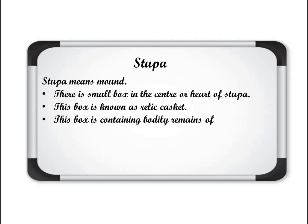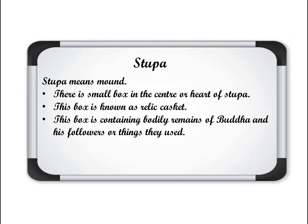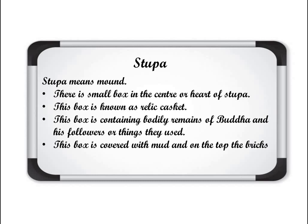The relic casket contains bodily remains of Buddha and his followers, or things they used. Bodily remains means teeth, ashes, and bones kept in the relic casket. Also, different things used by Buddha and his followers — like precious stones or coins — are kept in the relic casket. This relic casket is then placed in the center of the Stupa, covered with mud, and bricks are used to build the structure above it.